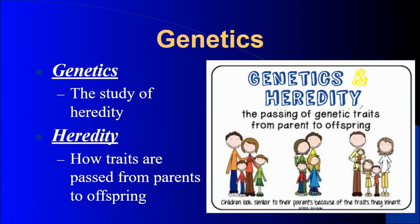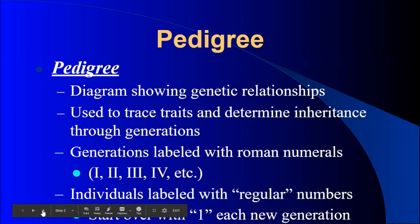Genetics is the study of heredity, and heredity is how traits are passed from parents to offspring. One of the first things we're going to be looking at are pedigrees. Pedigrees are diagrams that show genetic relationships. They're used to trace traits and determine inheritance through generations of a family.